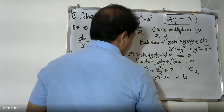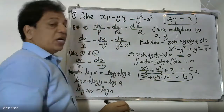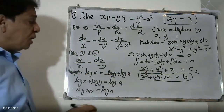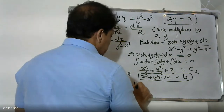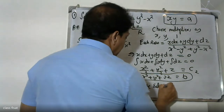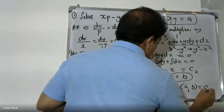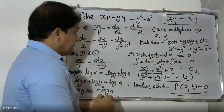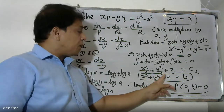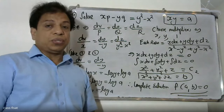Since 2c is an arbitrary constant, we write b equals x squared plus y squared plus 2z. Therefore the complete solution is f(a, b) equals 0, where a equals xy and b equals x squared plus y squared plus 2z. The problem is solved.